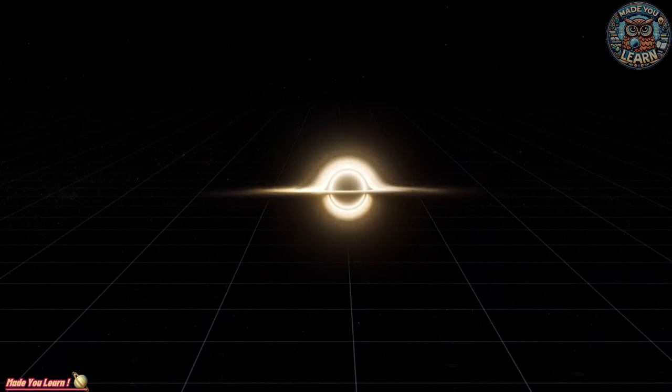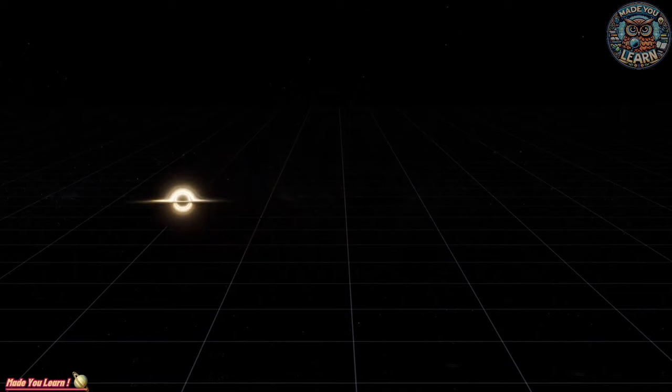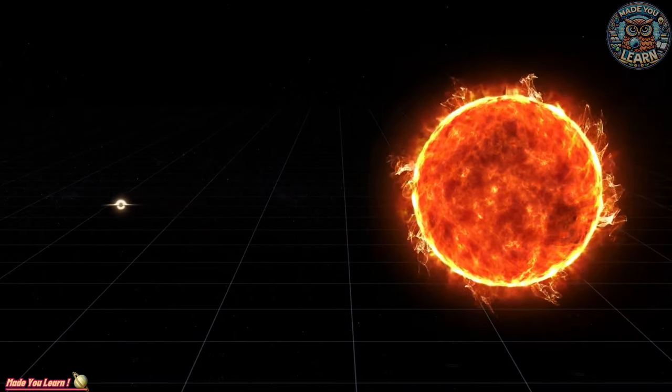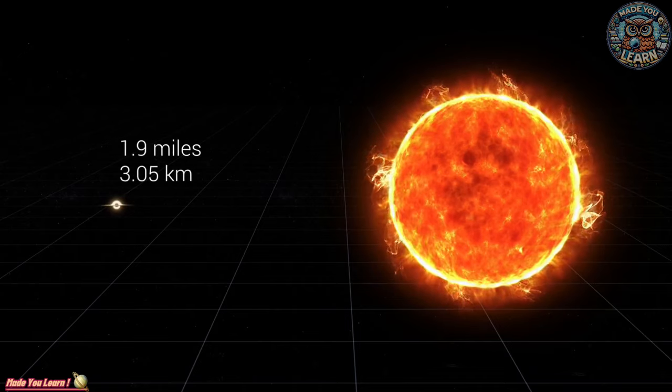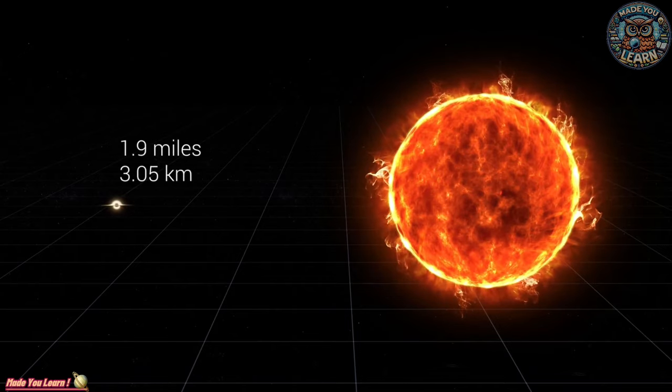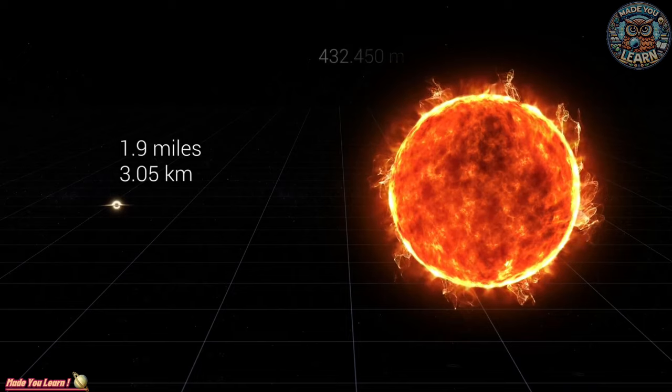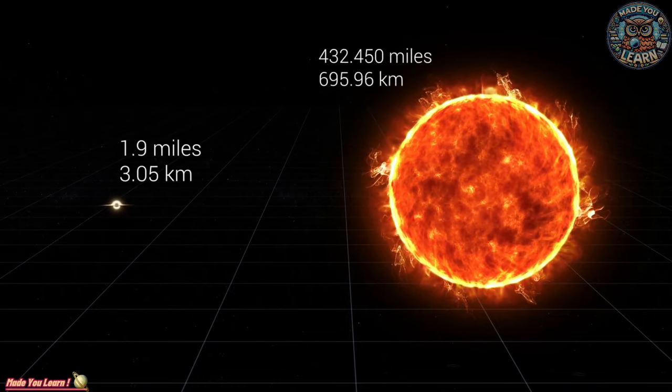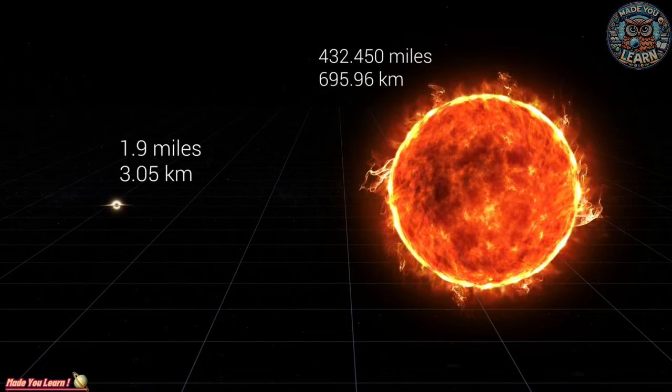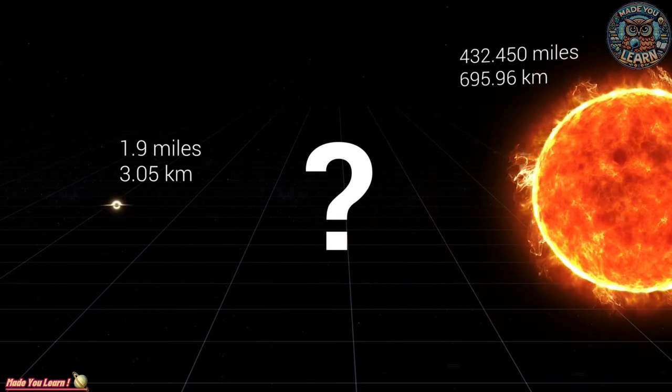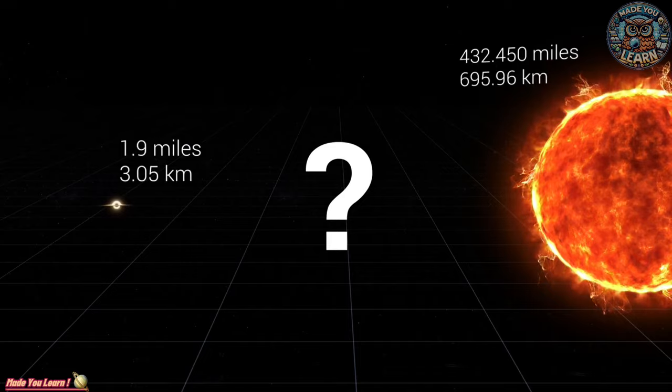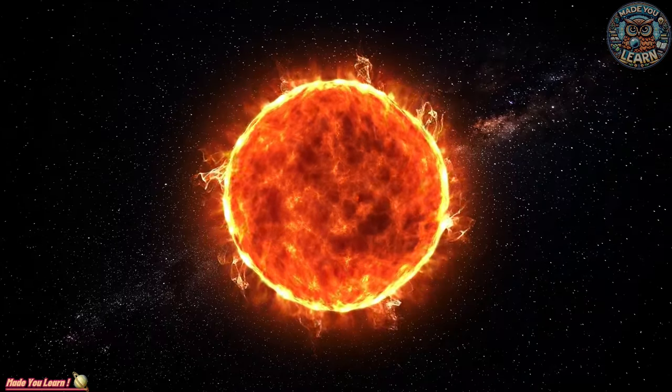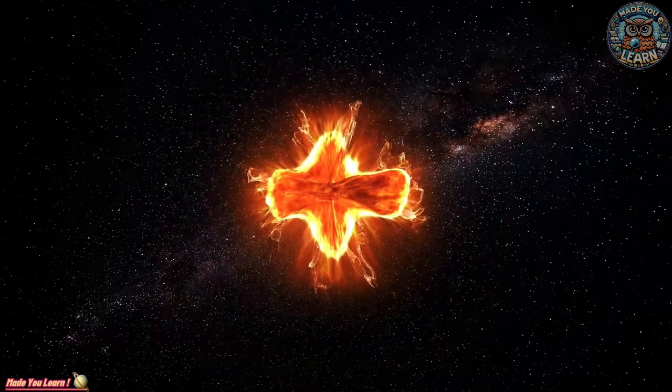Black holes come in different sizes, each with its own story. Stellar black holes, the remnants of massive stars, are common. Yet their sizes can be up to 20 times more massive than our sun. On the other end of the spectrum lie the supermassive black holes, which reside at the centers of galaxies, including our own Milky Way. These behemoths can be millions to billions of times the mass of the sun and play a crucial role in the formation and evolution of galaxies.